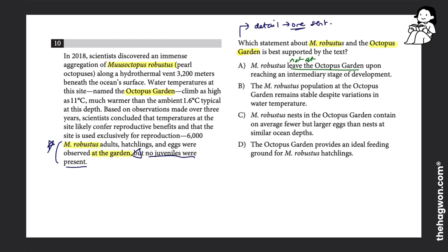Upon reaching an intermediary stage of development. Yeah, that's being juvenile. Intermediary means in between. So you're in between an adult and an egg or a hatchling. That's juvenile. And so that is going to be the correct answer.